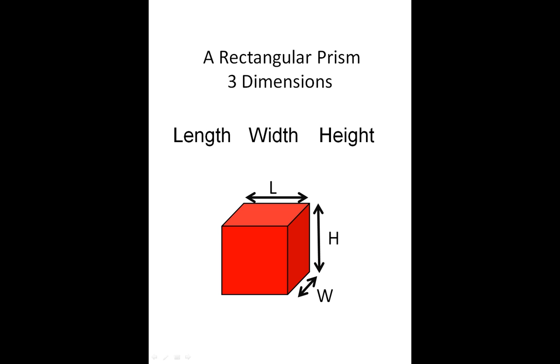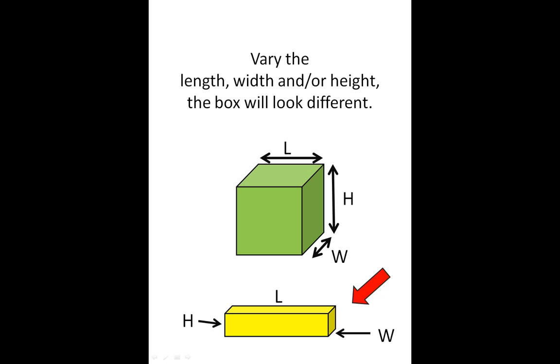So a rectangular prism has length, it has width, and it has height. And if you notice, if we vary the length, the width, or the height of our box, our rectangular prism, it will look different, but it is still a hexahedron and it's still a rectangular prism.